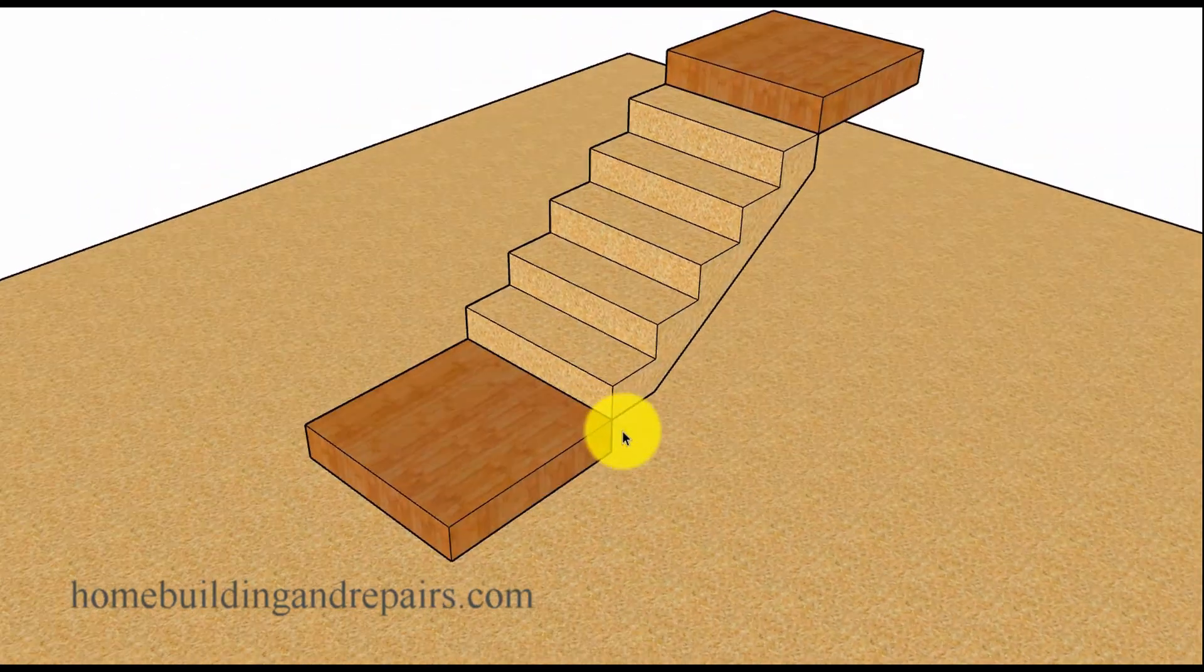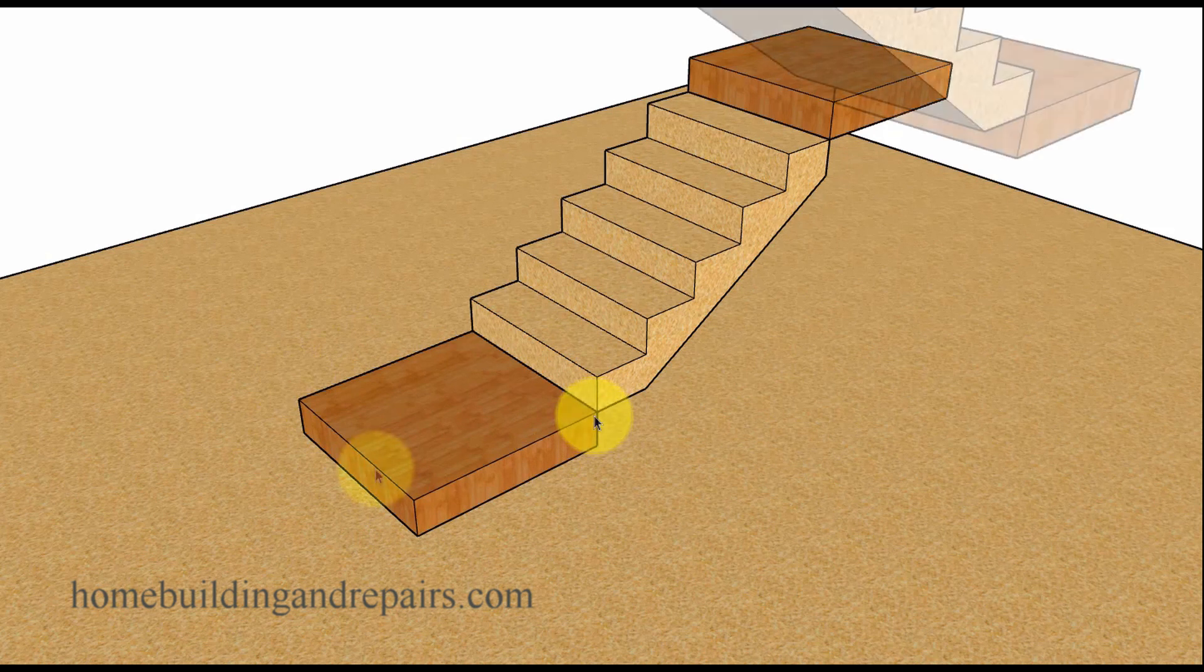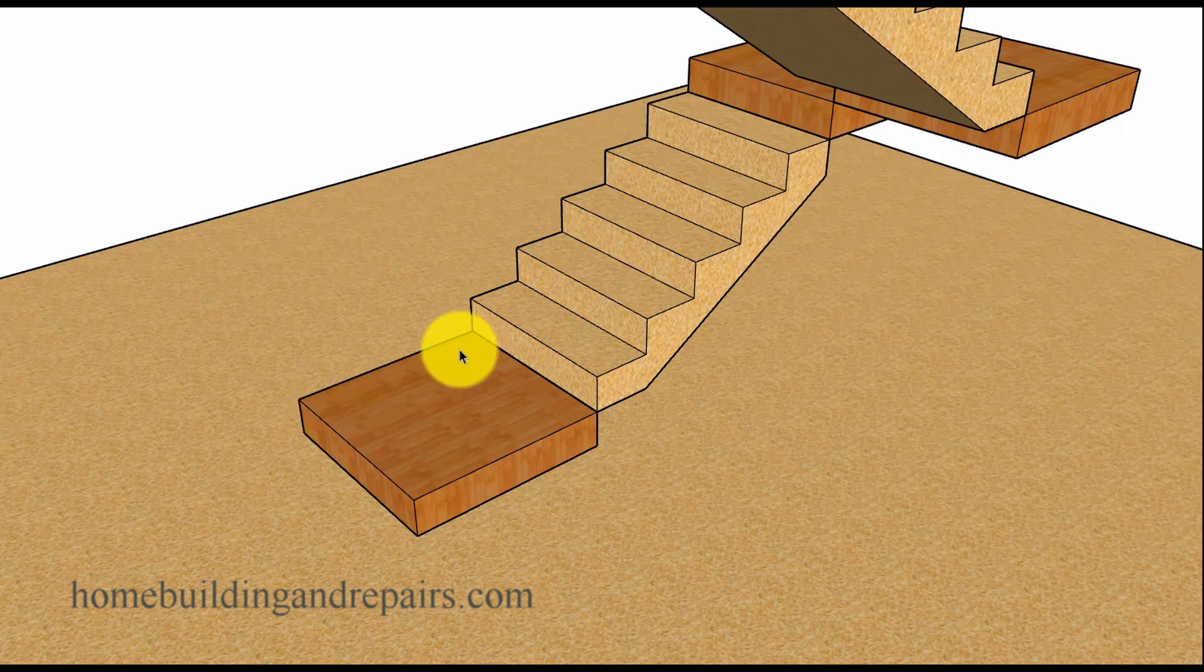A landing is going to be a flat surface without any steps in it. And usually going to be the width and the depth of the stairway is going to be the same. So 36 inches is the minimum width for a residential stairway. And the depth of course would be 36 inches.